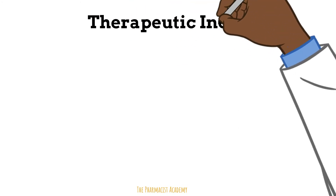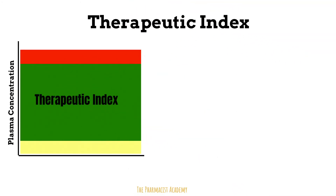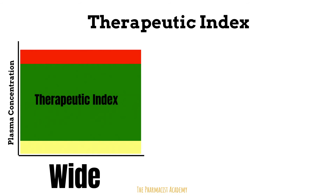Now that we understand what the therapeutic index is, let's learn about what it means to have a wide therapeutic index versus a narrow one. For the wide therapeutic index, there's a huge gap between the yellow and the red zone, so there's a high chance that when you take this medication you will land in the green zone and not experience side effects.